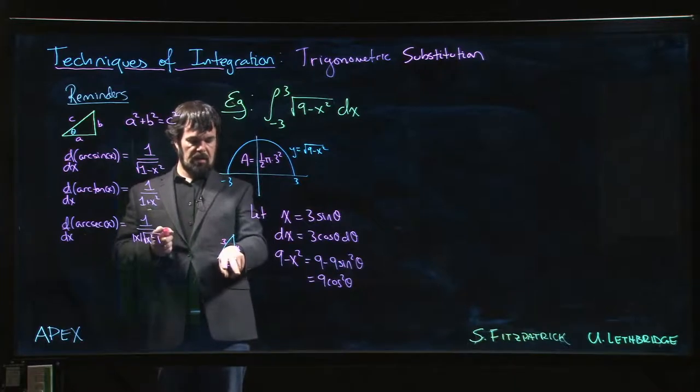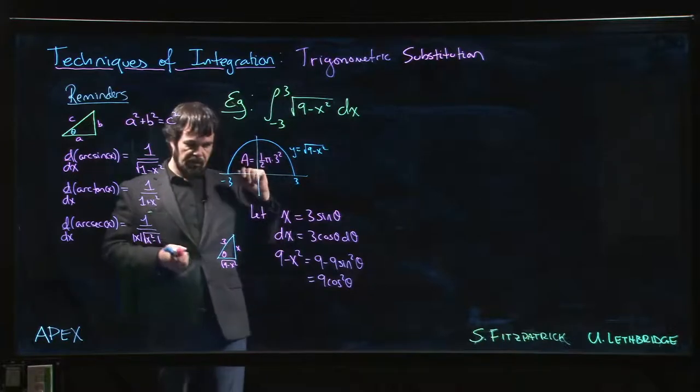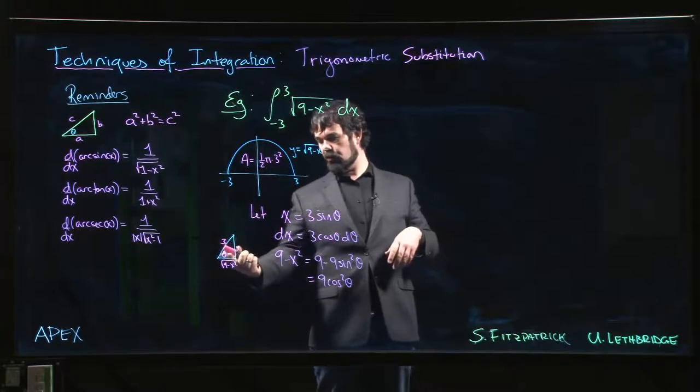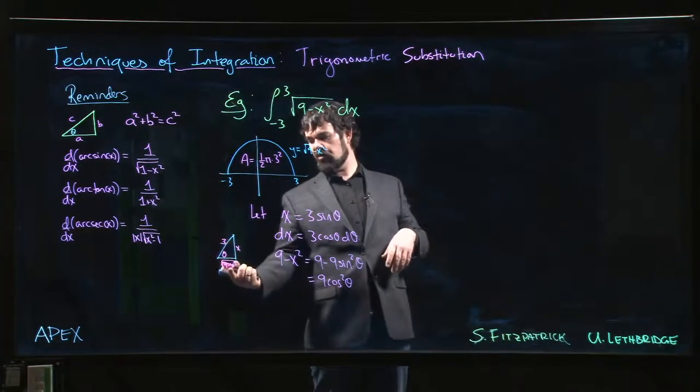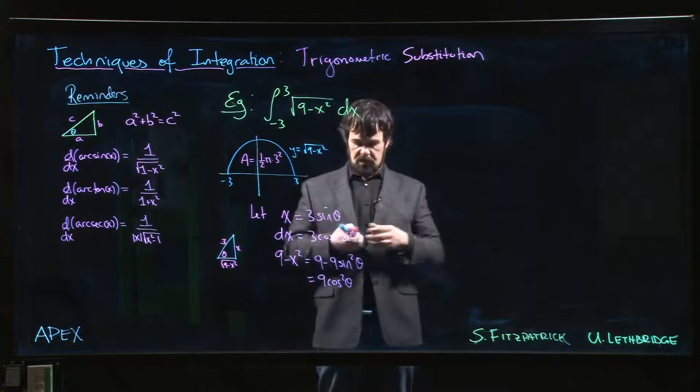Now, that tells me that the adjacent side, 9 minus x squared is the thing that we're interested in. So sometimes you can kind of look at that and you can say, hey, this is, this is what? Well, cos theta is that divided by 3. So this side must just be 3 cos theta. That often helps.